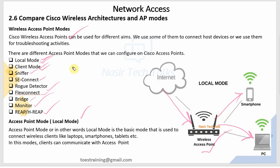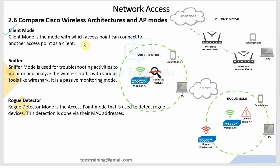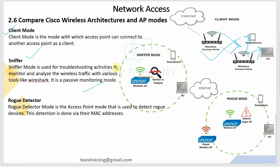Client mode is the mode where an access point can connect to another access point - one AP acts as the client to another AP. Sniffer mode is used for troubleshooting: it monitors and analyzes wireless traffic using tools like Wireshark. In sniffer mode, packet analysis and monitoring are possible.